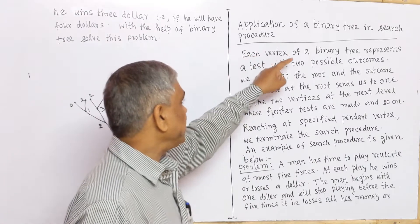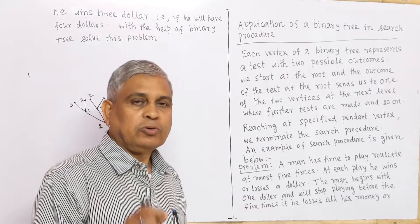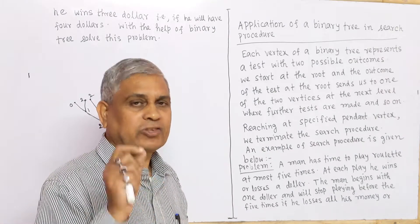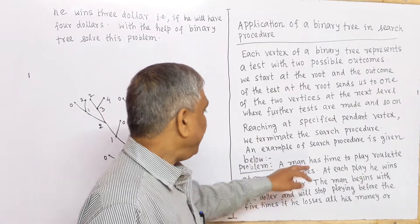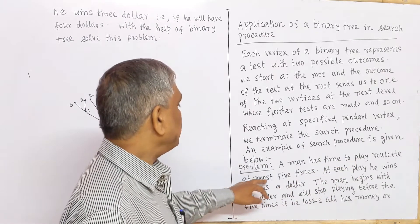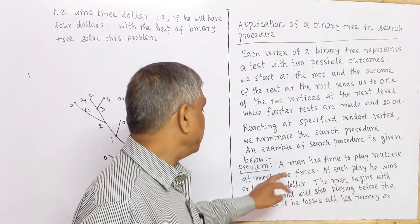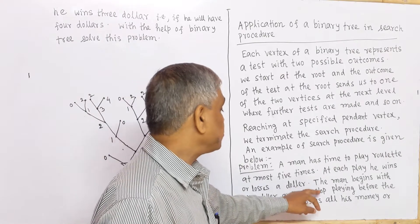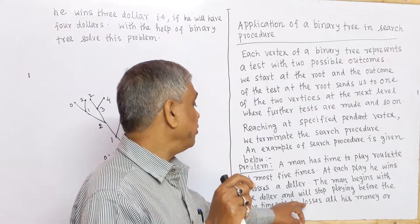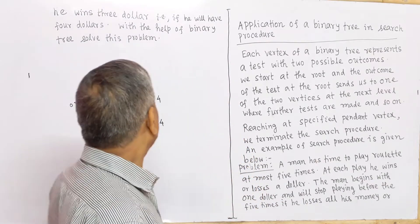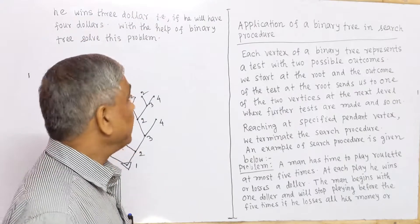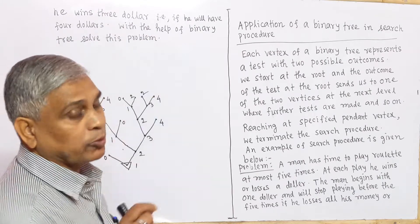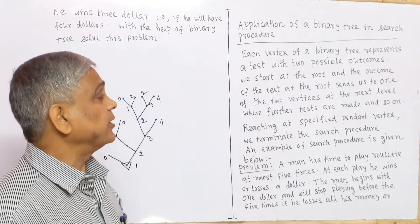Now we describe the application of a binary tree in search procedures. With the help of a particular example, we try to understand this process. Here is a problem: a man has time to play roulette at most 5 times. At each play, he wins or loses a dollar. The man begins with 1 dollar and will stop playing before the 5 times if he loses all his money or if he wins 3 dollars — that is, if he will have 4 dollars. With the help of a binary tree, solve this problem.